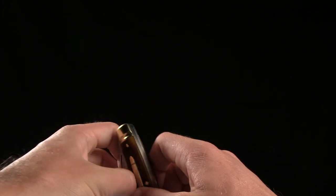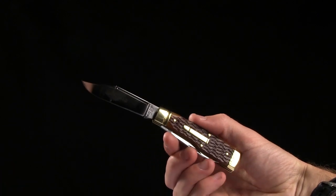And there you have it. So check it out. Buy it bladehq.com. This is the Great Eastern Cutlery number 44.